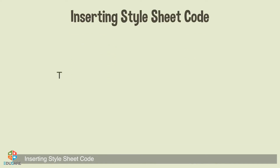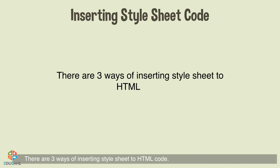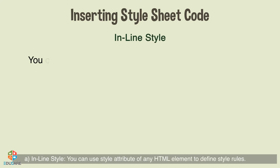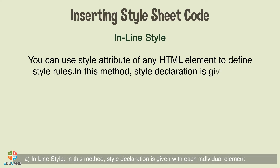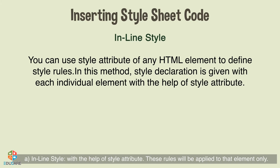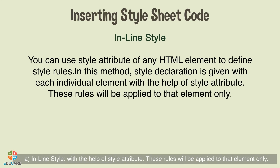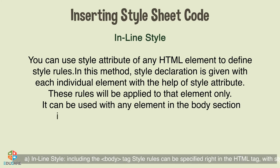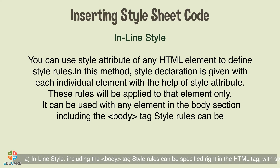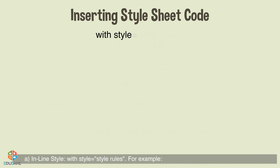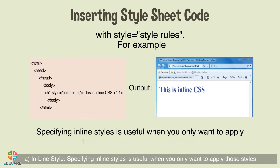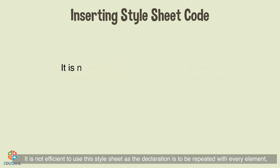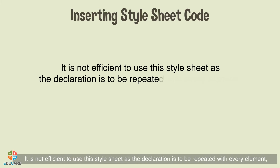Inserting Style Sheet Code: There are three ways of inserting a style sheet into HTML code. Inline style: You can use the style attribute of any HTML element to define style rules. In this method, the style declaration is given with each individual element using the style attribute. These rules will be applied to that element only. Style rules can be specified right in the HTML tag using style="". Specifying inline styles is useful when you only want to apply styles to a specific element, but it is not efficient as the declaration must be repeated with every element.